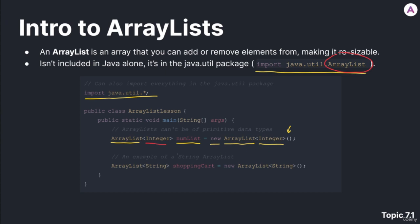For example, here's a String ArrayList — I called it Shopping Cart — and you can see that inside the pair of tags, I've included the word String in both places, and that's the only change from the previous example.